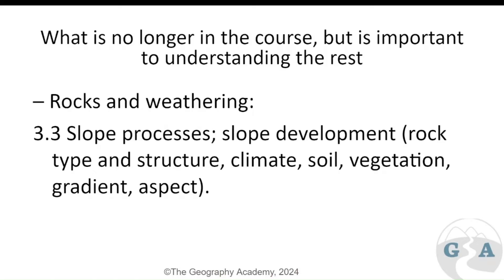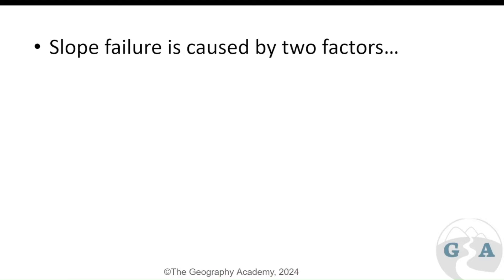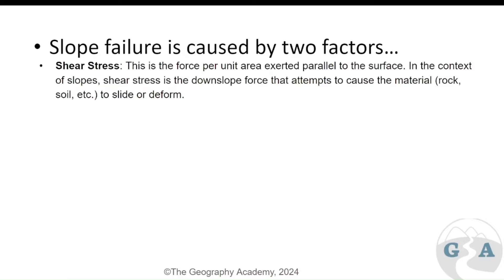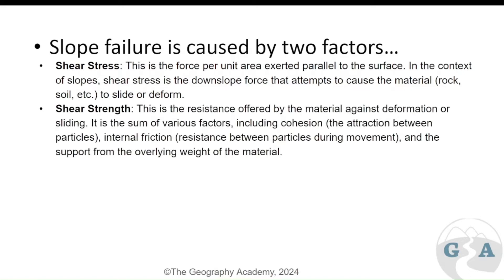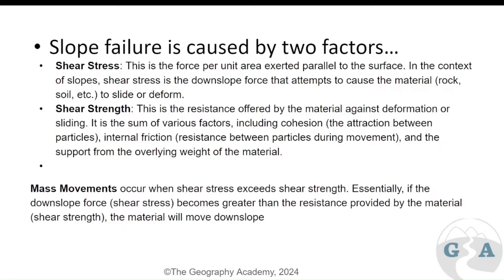Failure is caused by two factors. Shear stress is the force per unit put onto the surface — the stress upon the rock to cause it to move or change. All slopes are already in equilibrium, and shear stress can change that. Shear strength is the resistance offered by a material to deformation or sliding — the internal force or cohesion that allows slopes to exist and not change majorly. Mass movements occur when shear stress exceeds shear strength, i.e., when the downward force becomes greater than the resistance.